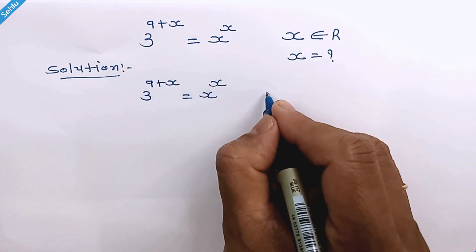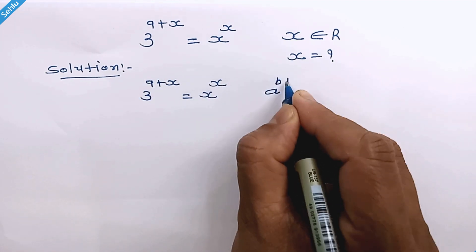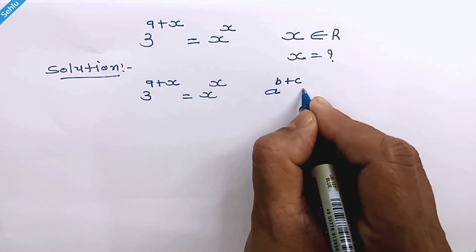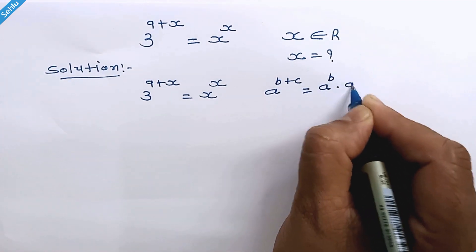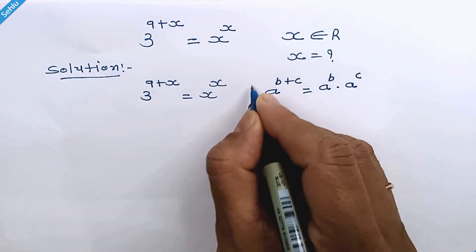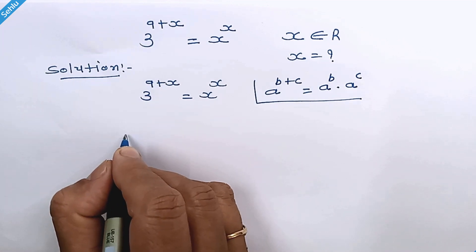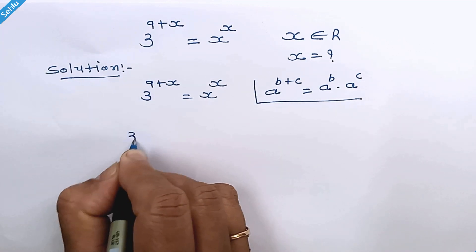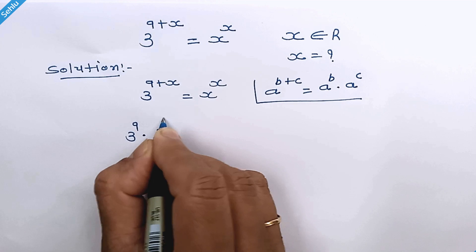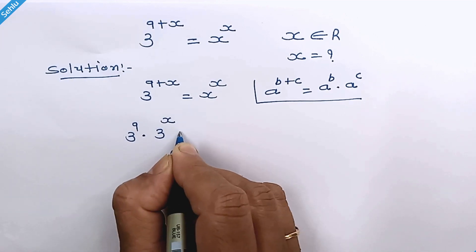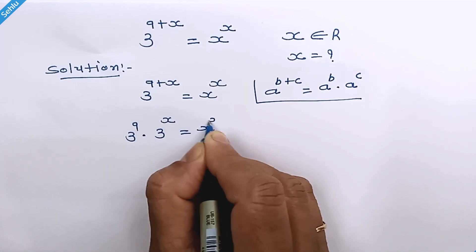For this part we will use a rule where a raised to b plus c can be written as a raised to b times a raised to c. So we can write this as 3 raised to 9 times 3 raised to x is equal to x raised to x.